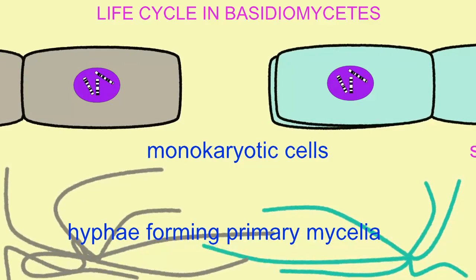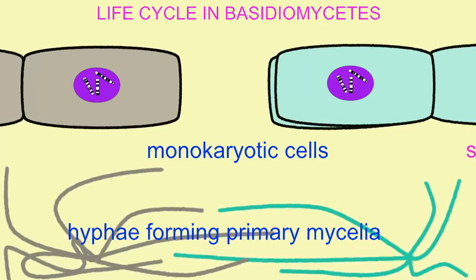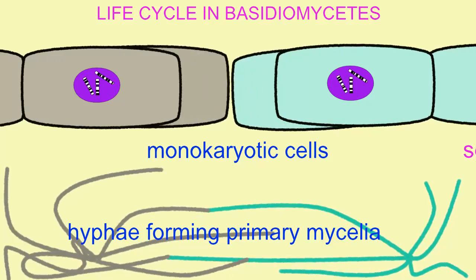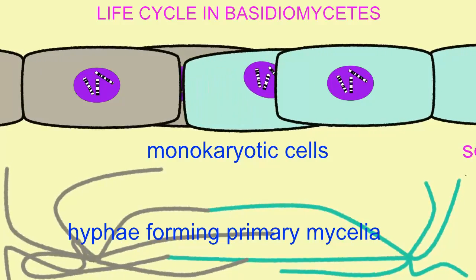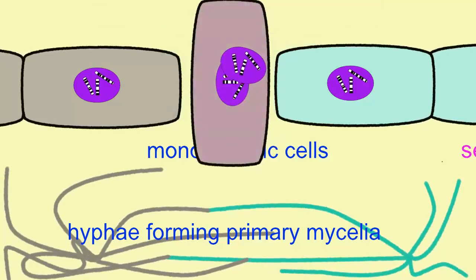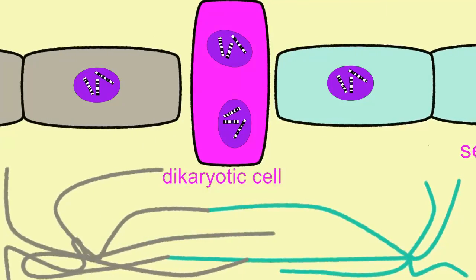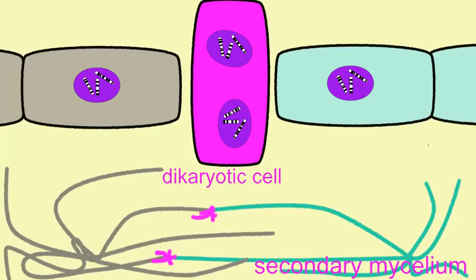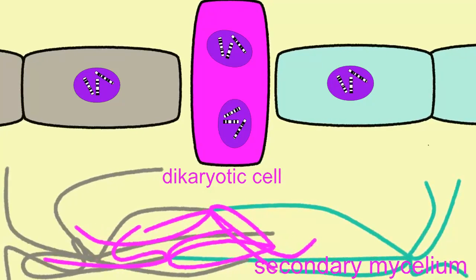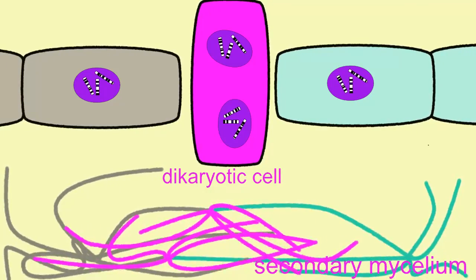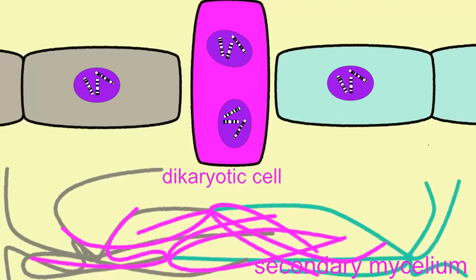If hyphae from positive and negative mating types fuse, a new type of cell with two haploid nuclei — what is known as a dicaryon phase — will form. This cell will then produce hyphae which will produce a secondary mycelium.